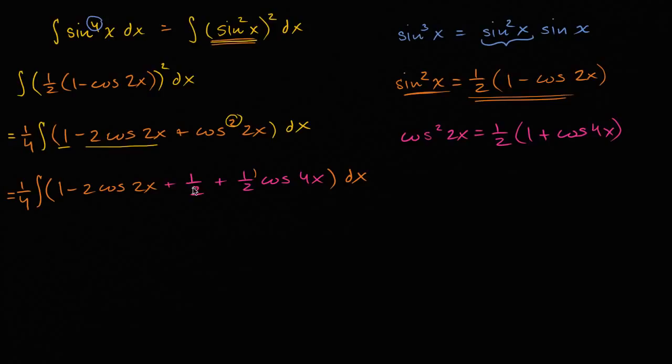Let's see, I could take this one half and add it to this one, and that's going to get me three halves. So add those together, I'm going to get three halves. So this is going to be equal to one fourth times the integral of three halves minus two cosine of two x.